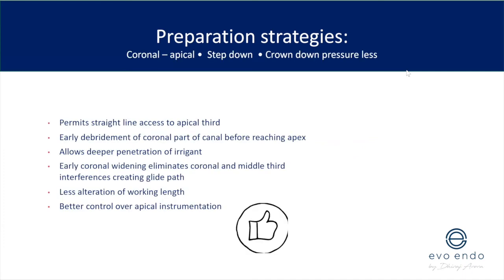Crown down pressureless — or step down, or corono-apical — is what everyone uses now. Its main benefit is it permits straight-line access to the apical third, though that point is less critical now with more flexible files. We no longer need significant coronal flares that weaken the tooth pericervically; we can keep coronal preparations narrower but enhance irrigation throughout. Early debridement of the coronal canal before reaching the apex addresses the majority of bacteria found there and allows deeper penetration of irrigants.